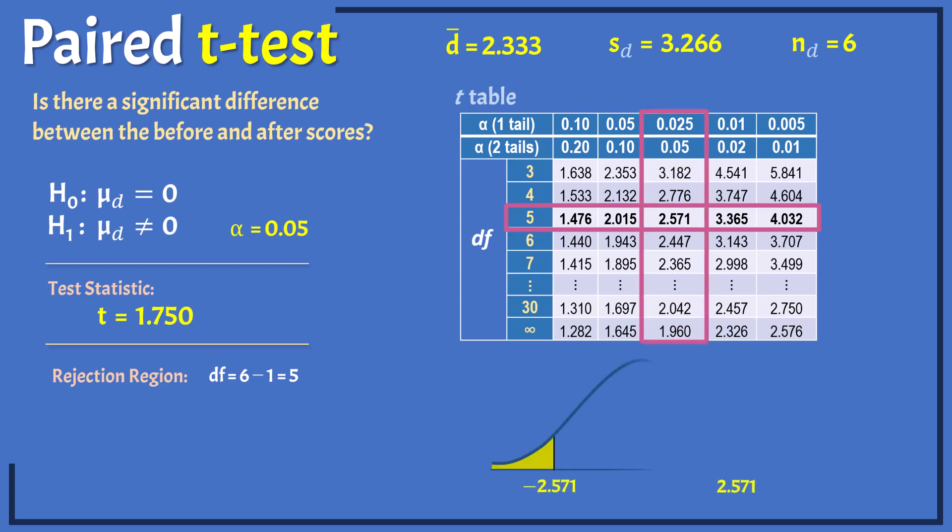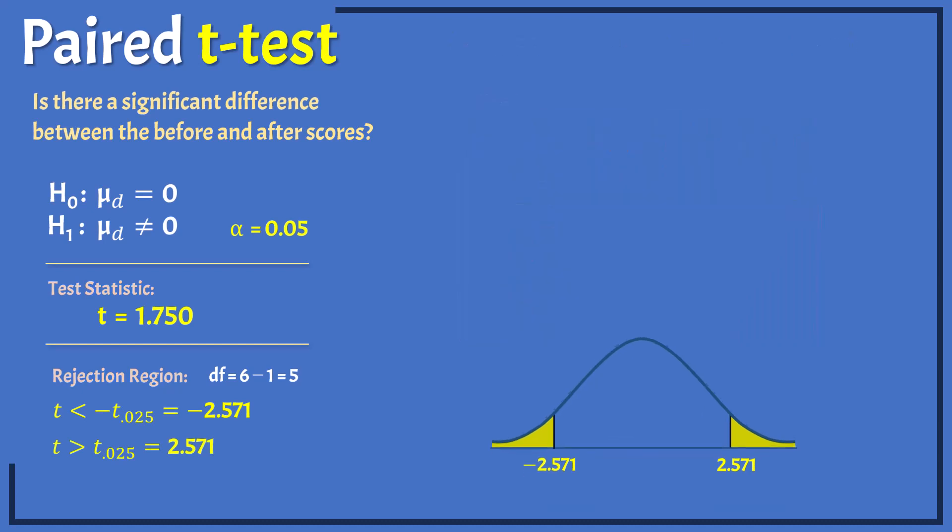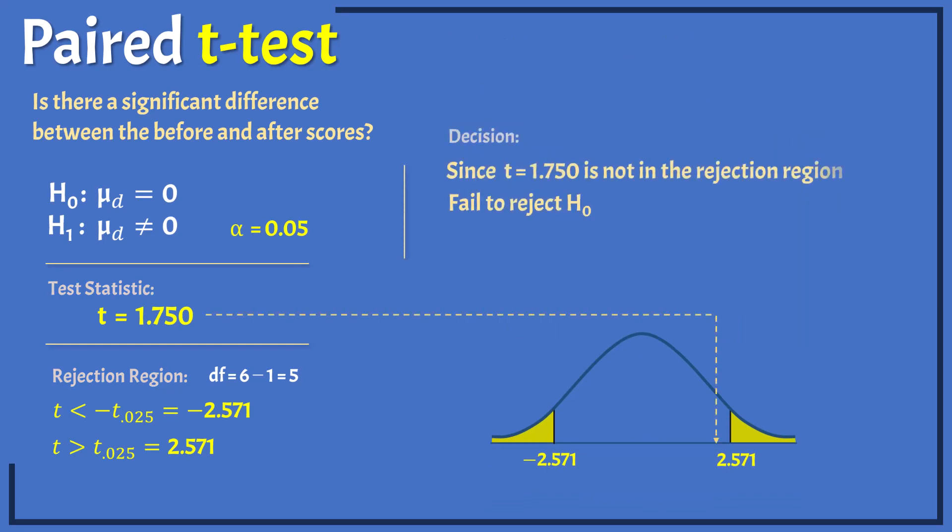That is, we reject the null hypothesis if the observed t is less than negative 2.571 or if it is greater than positive 2.571. Since the observed test statistic is not in the rejection region, we cannot reject the null hypothesis at alpha equals 0.05.